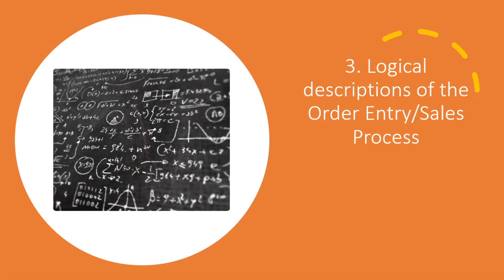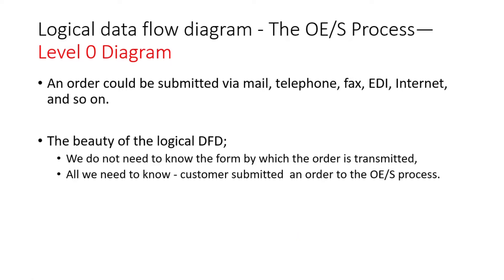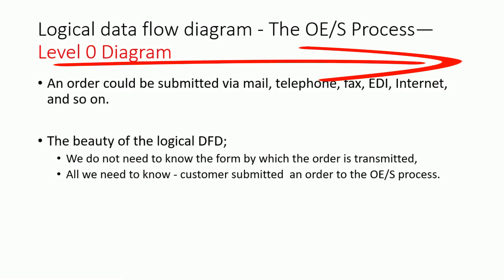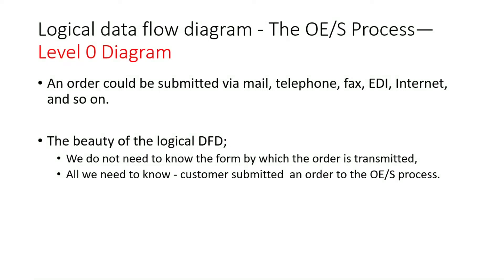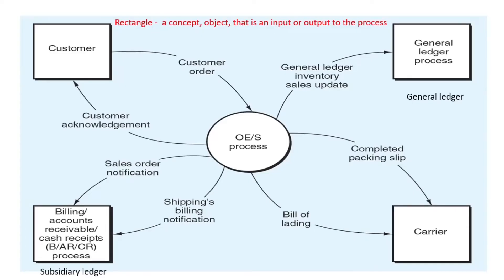The logical descriptions of the order entry and sales process: the logical data flow diagram starts with the level zero diagram. This is the most abstract level of the diagram. An order could be submitted via telephone, fax, electronic data interchange, internet, and so forth. The good thing about logical data flow diagrams is that we don't need to know the form by which the order has been transmitted — all we need to know is that the customer has submitted an order to the order entry sales process.